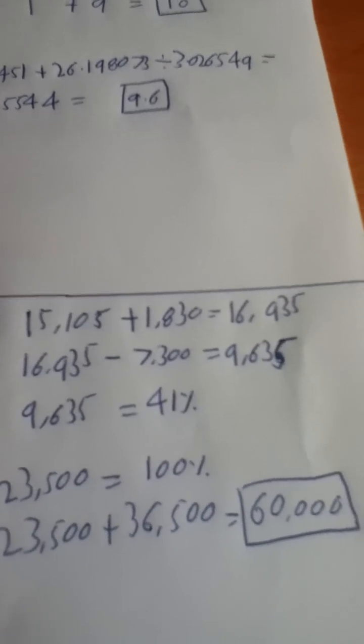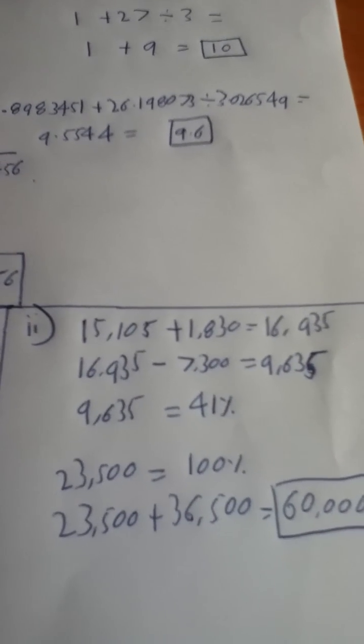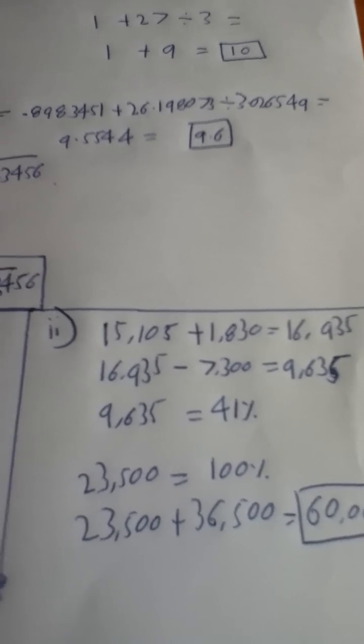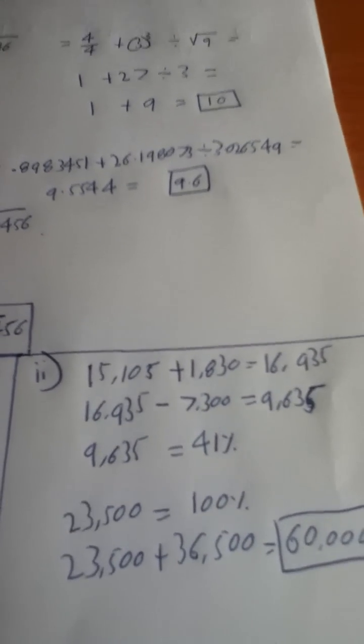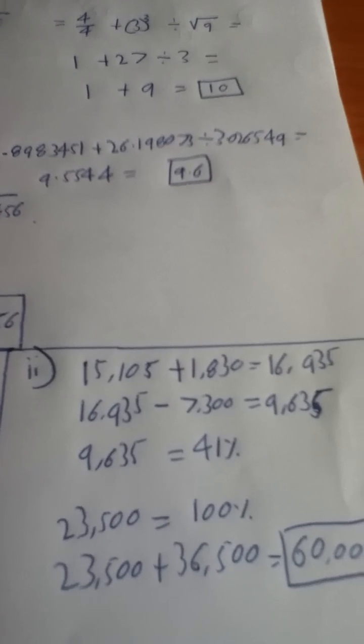Then part 2. You are asked what is Aisling's new gross income. Her net tax amount is 15,105. And if you add the tax credit to this you get 16,935.